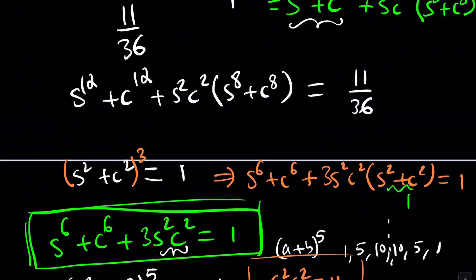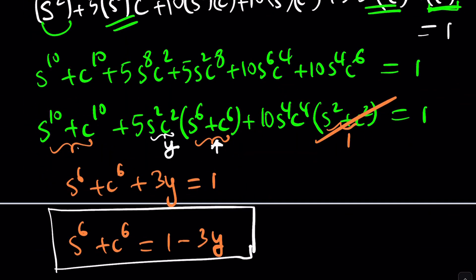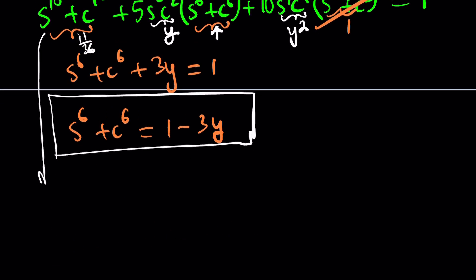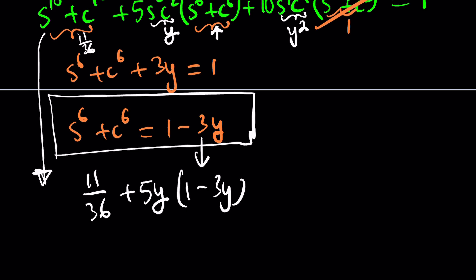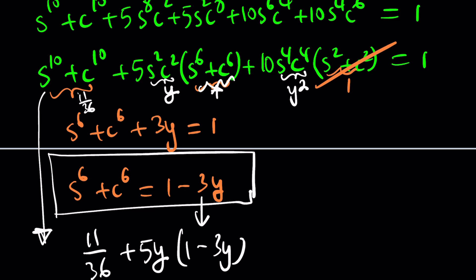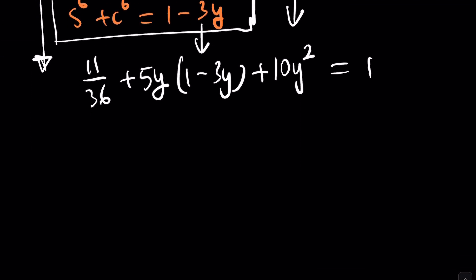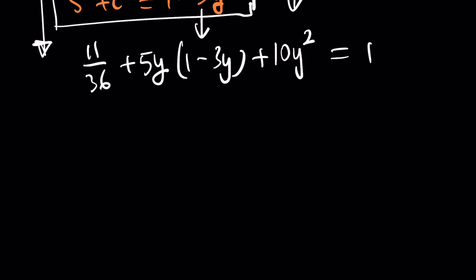We know the sum of 10th powers is 11 over 36. The term 10 s to the fourth c to the fourth is 10y squared, since s squared c squared all squared gives y squared, and s²+c²=1 takes care of the remaining factor. So substituting everything: 11 over 36 plus 5y times 1 minus 3y plus 10y squared equals 1. This is a quadratic equation — going from the 12th power to the 10th gives us a quadratic.